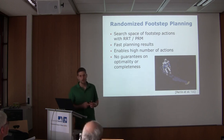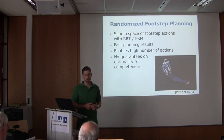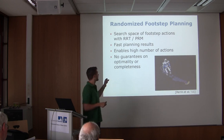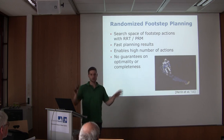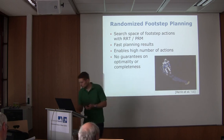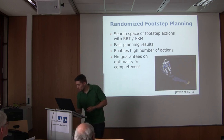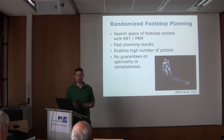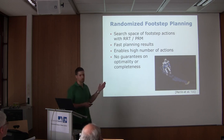RRTs are rapidly growing random trees, and PRMs are probabilistic roadmaps. These are randomized methods — similar but different in how they work. With A* you expand actions at every step; with randomized methods you're randomly exploring the configuration space, looking at which footsteps may go in the goal direction. You'll never explore the whole space, so you can construct arbitrary planning problems where they fail. But in practice, especially for high degree-of-freedom motion like whole body motion, these methods are typically used.